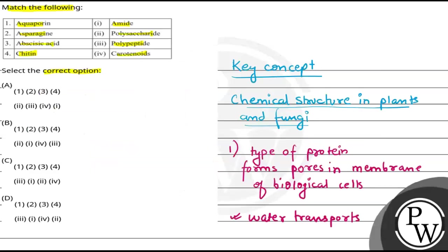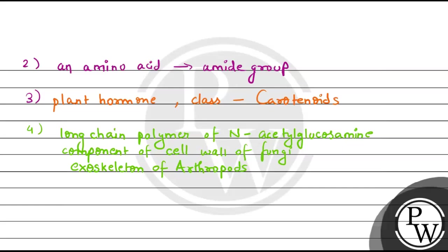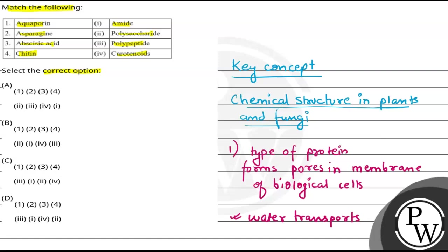This is why chitin matches with polysaccharides, because it is a glucose component, that is carbohydrate. So the correct match is option D. Hope you have understood. Best of luck. Thank you.